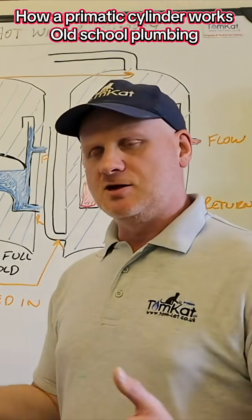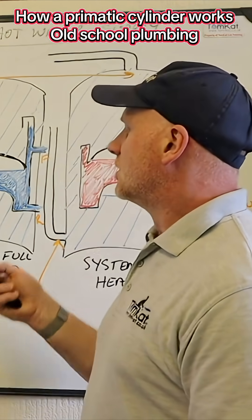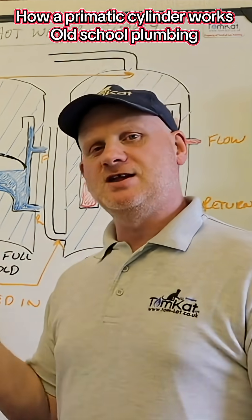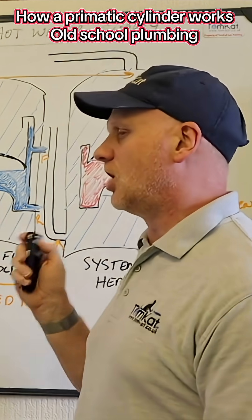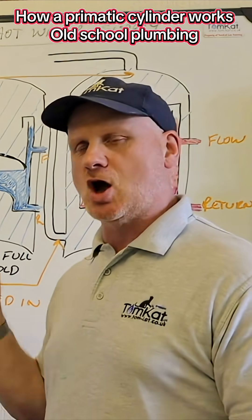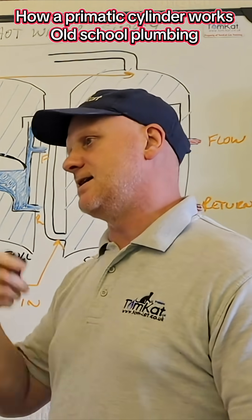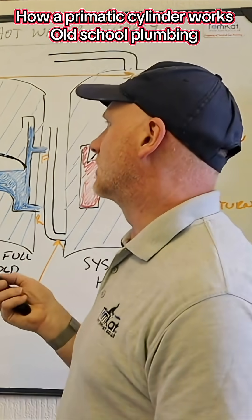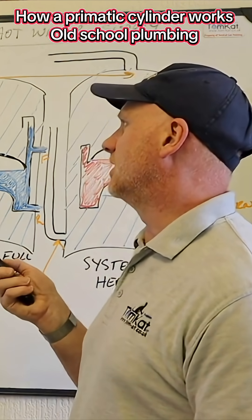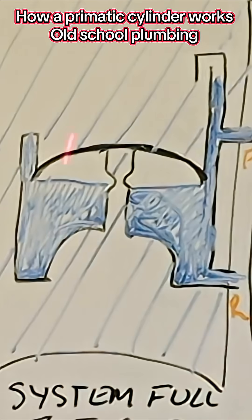So when you're initially filling and draining these cylinders, you should always have the hot tap open because the furthest away hot tap downstairs will get rid of all the air through the top here. Now then we're fully filling the system up now in the next one so you can see the actual primatic and the air bubble is in the top.